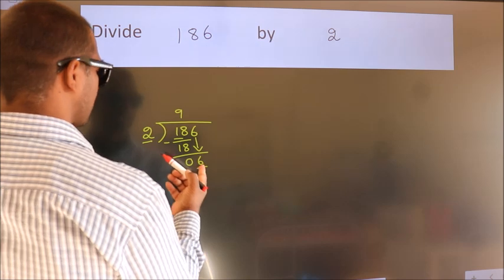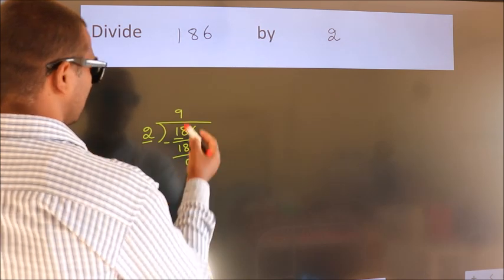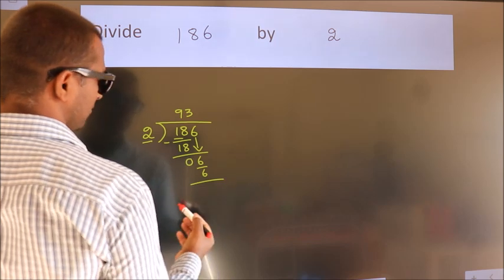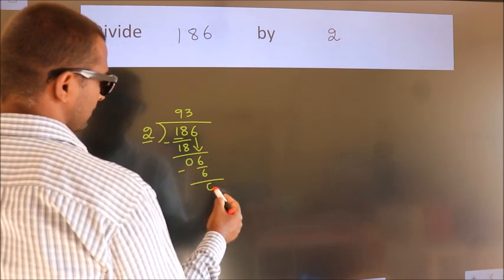When do we get 6 in the 2 table? 2 times 3 is 6. Now we subtract. We get 0.